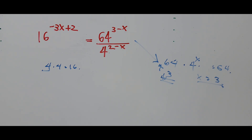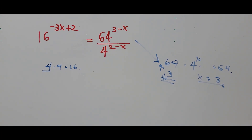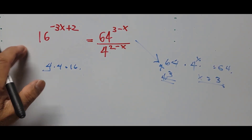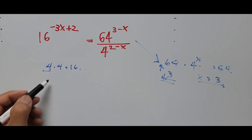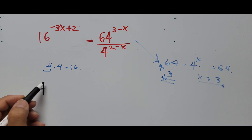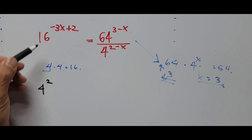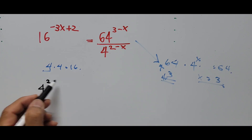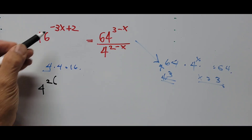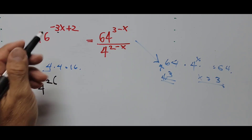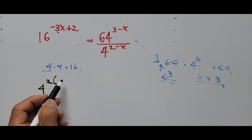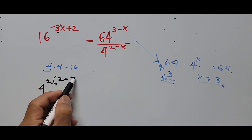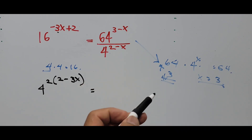Let's rewrite everything with base 4. On the left side, 16 equals 4 squared, so we have 4 squared raised to the power negative 3x plus 2. Multiplying the exponents gives 2 times (negative 3x plus 2), which equals 4 minus 6x.